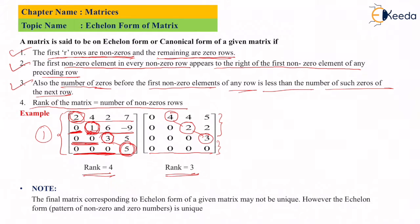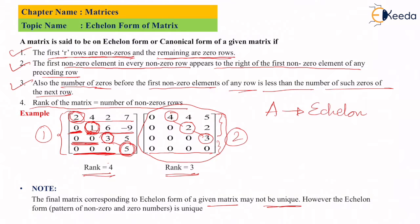Note: the final matrix corresponding to the echelon form of a given matrix may not be unique. If multiple students apply different row transformations to reduce matrix A to echelon form, they may each arrive at a different final matrix. The final matrix may not be unique because the row operations used by each student will differ.